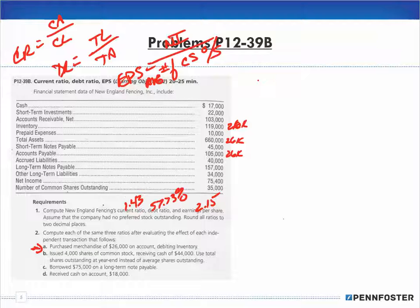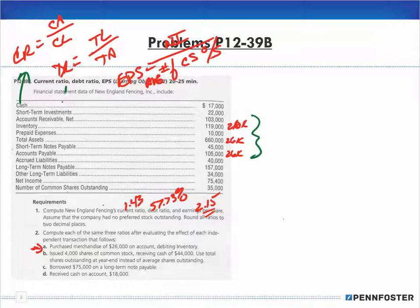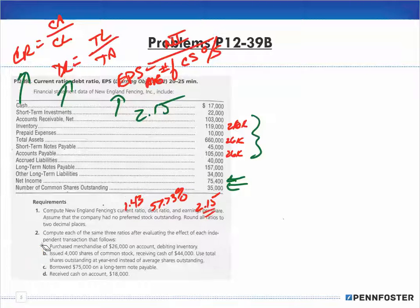For earnings per share under Transaction A: since we didn't affect net income or shares outstanding, it's still 2.15 — same as the base figure. To summarize Transaction A: because we changed assets and liabilities, current ratio and debt ratio changed. But since the 75,400 net income and 35,000 shares were unaffected, earnings per share stayed at 2.15.